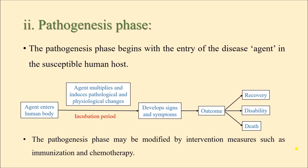Next starts the stage of pathogenesis, and it begins when there is entry of the agent or the pathogen into the susceptible human host. Everything said here is in the context of communicable disease; for non-communicable disease we replace the agent or pathogen with the risk factors. In the pathogenesis phase, the agent enters the human body and after entering it multiplies and induces pathological changes at the cellular level as well as physiological changes in the human host. After some period — which can be a few hours to a few days or months depending on the disease — there is development of signs and symptoms.